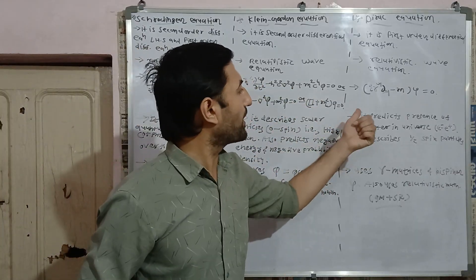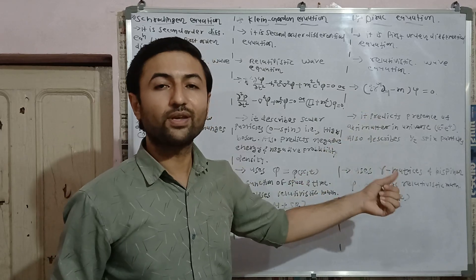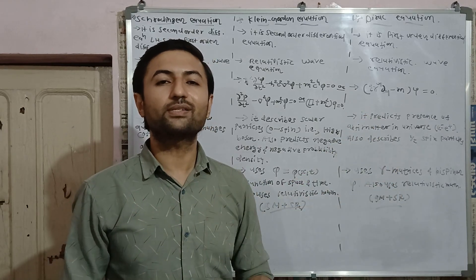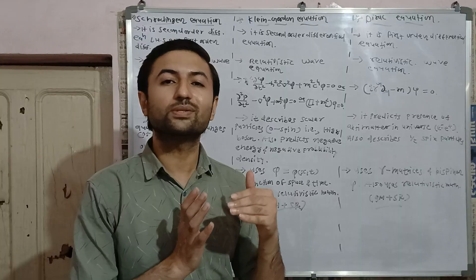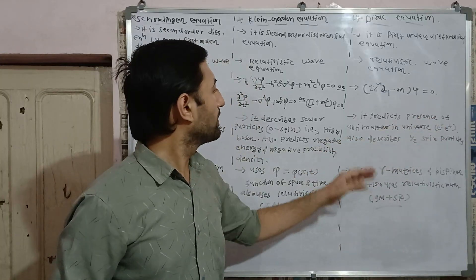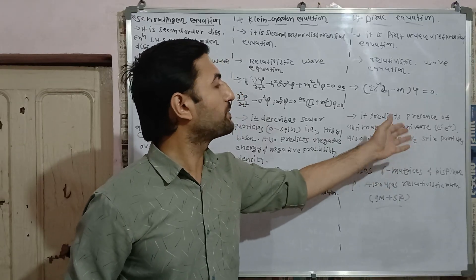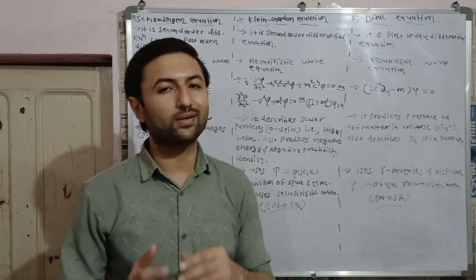So Dirac equation predicts presence of antimatter in universe. We know that antimatter is a kind of matter which has same mass but opposite charge, for instance electron and positron. It also describes all one-half spin particles, for instance electrons and quarks.